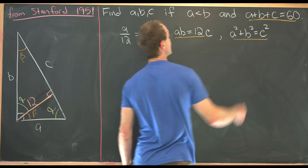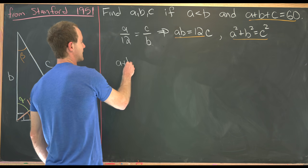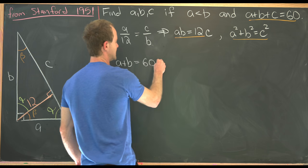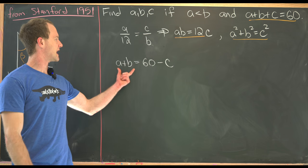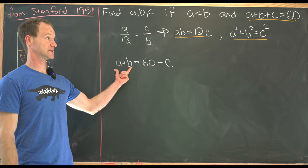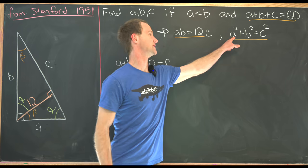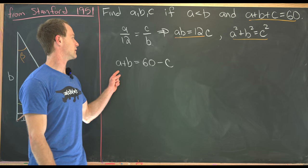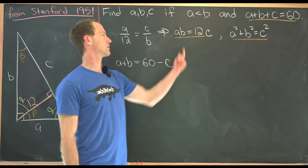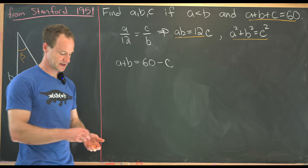So let's take this equation and rewrite it as A plus B equals 60 minus C. But now if we square the left-hand side, we'll have A squared plus B squared, which we know to be C squared. And then we'll have A times B, but look, we know that that can be written in terms of C as well.